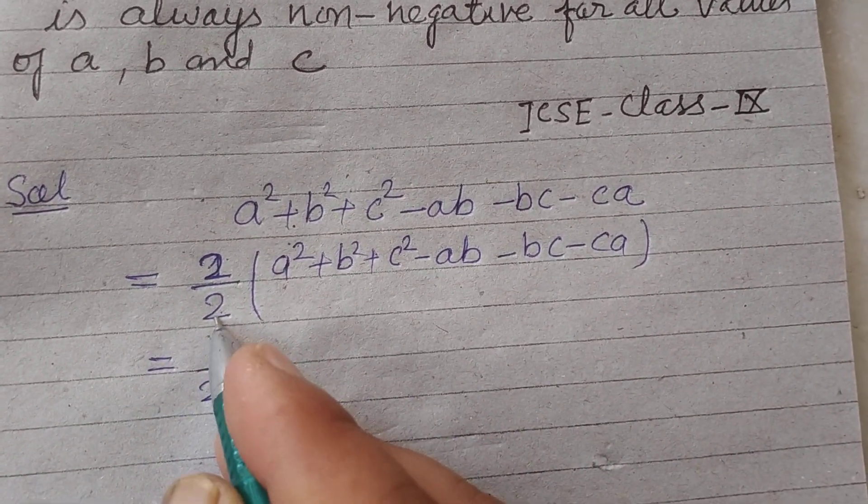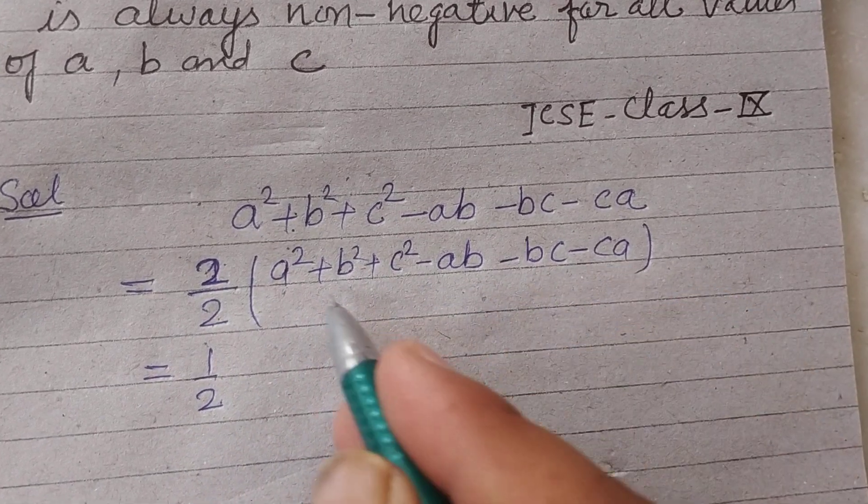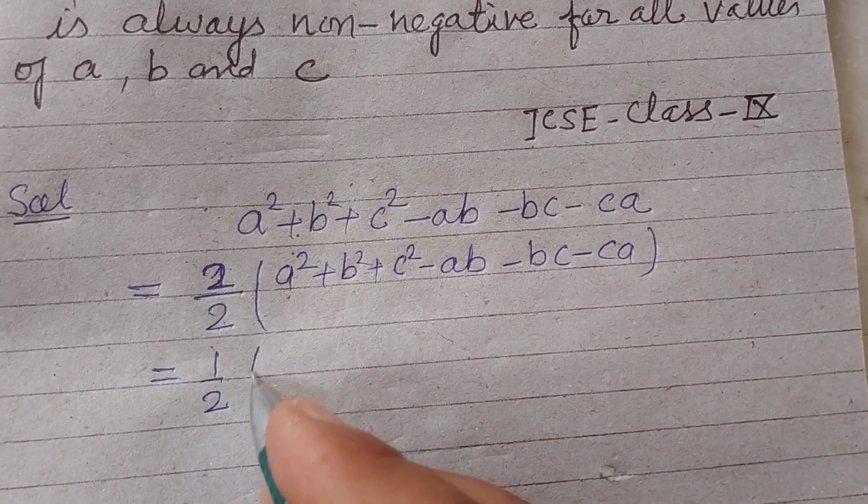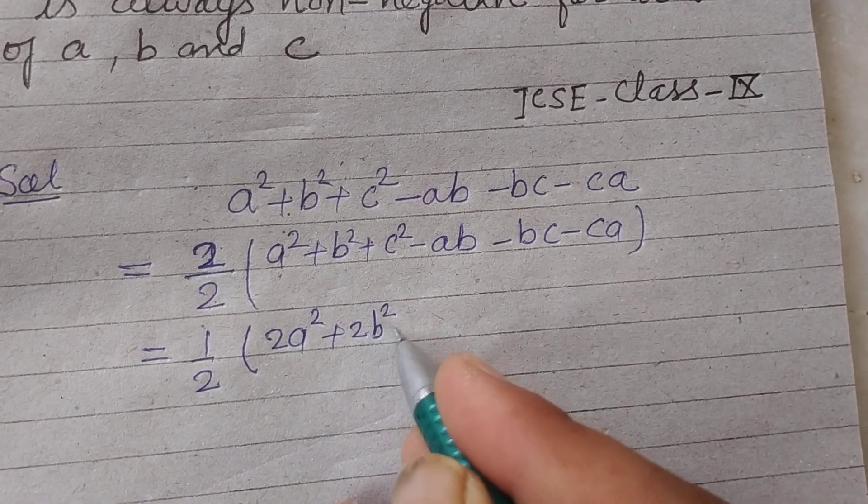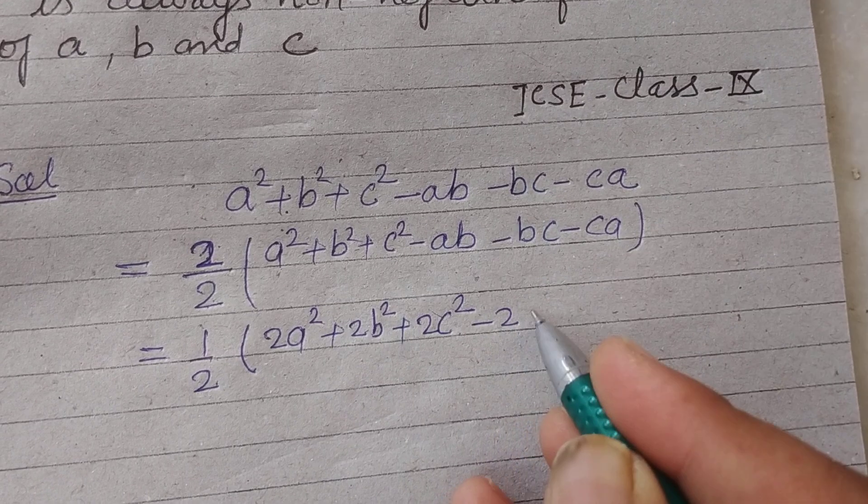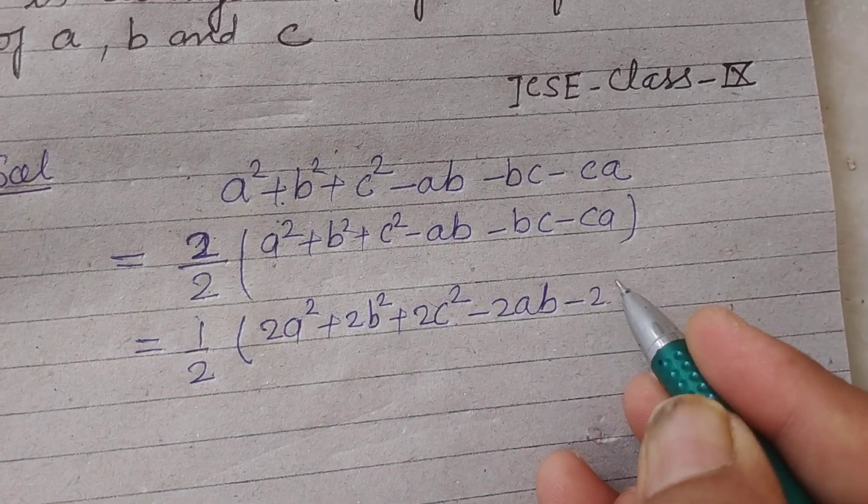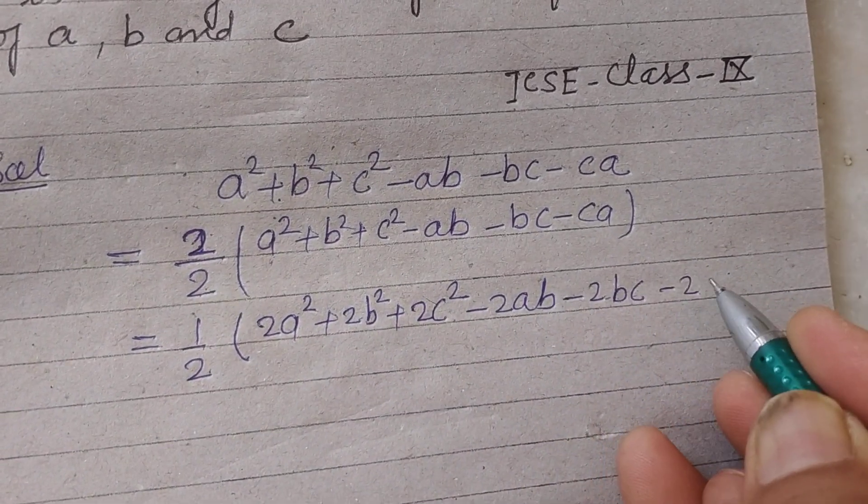So this is 1/2, we multiplied this bracket with 2. So 2a², 2b², 2c² - 2ab - 2bc - 2ca.